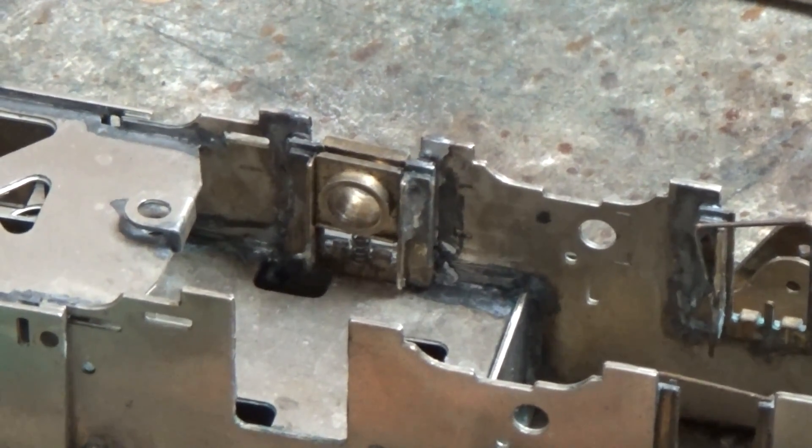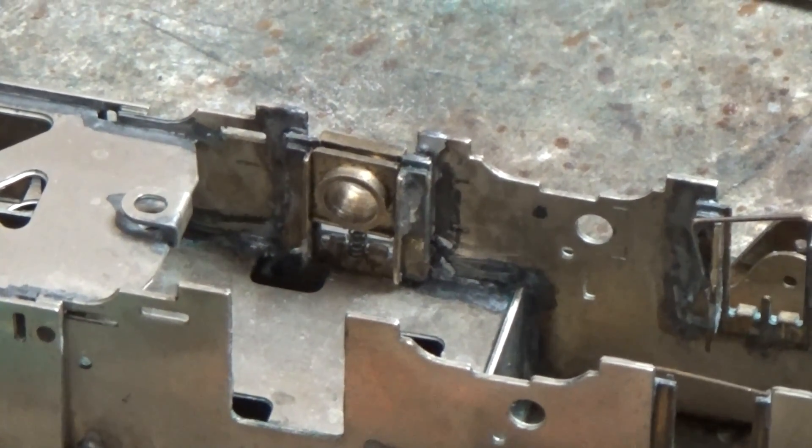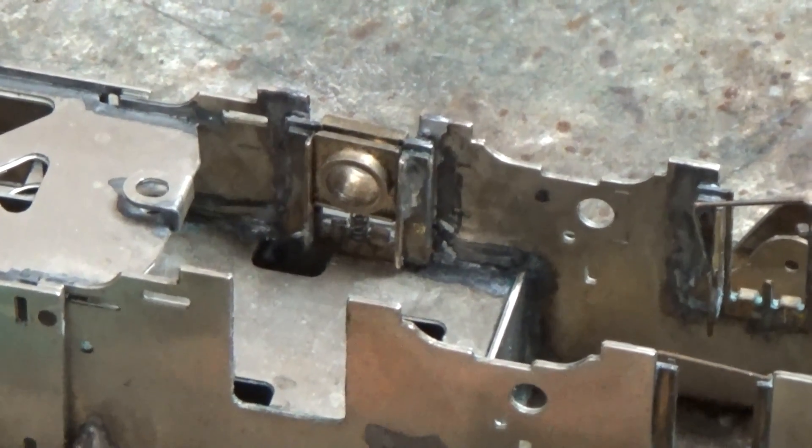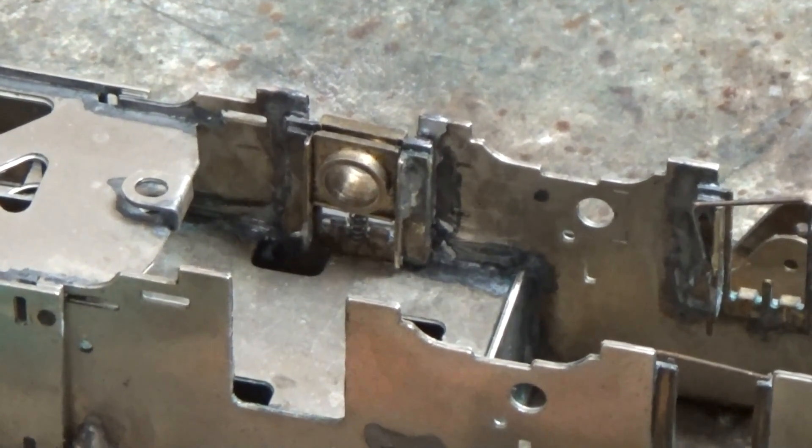And finally there is the horn block fitted in the side frames of the locomotive. That is now fully insulated from the side frames.